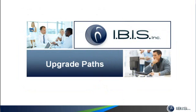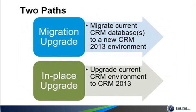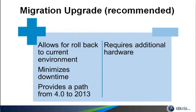Once you have all that ready, you can assess your upgrade paths. There are two paths: a migration upgrade or an in-place upgrade. With a migration upgrade, you're moving your old databases to your new environment and CRM does a database upgrade for you. With an in-place upgrade, you upgrade both the databases and the application at their current location. A migration upgrade is recommended because you're moving to a completely new environment with new hardware, you always have the option to roll back, and you can minimize production downtime. This also provides a path to go from CRM 4.0 to 2013 via CRM 2011.